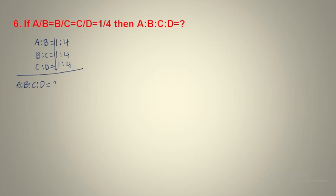Question 6: a/b = 1/4, which means a is to b is equals to 1 is to 4. Similarly, b is to c is equals to 1 is to 4, and c is to d is equals to 1 is to 4.